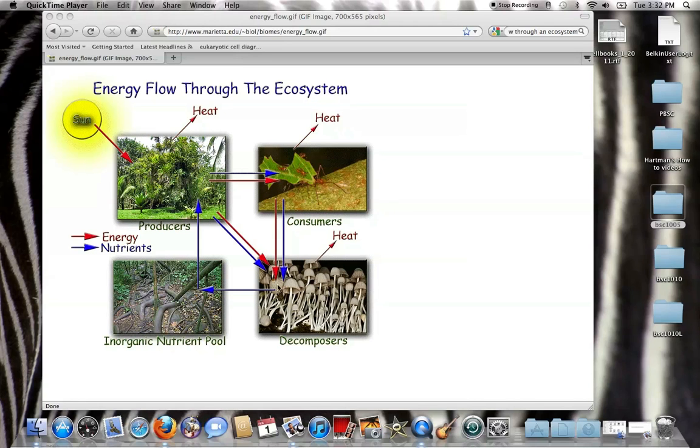So, we see that energy moves through the system. This cycle gives us energy in the red arrows and nutrients in the blue arrows. And we see that the nutrient cycle here moves through and the energy cycle comes here. Heat's given off at all of these stages.